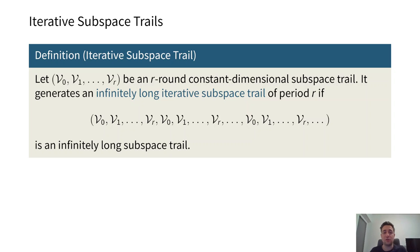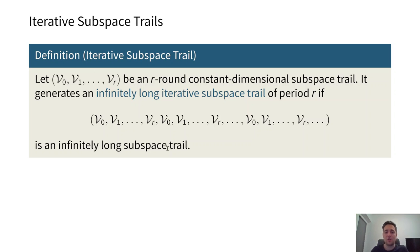We can also talk about iterative subspace trails. If we have subspaces V's and they repeat themselves after some rounds with a period of r, then we talk about an iterative, or infinitely long, subspace trail which is iterative.